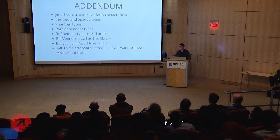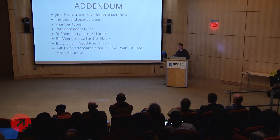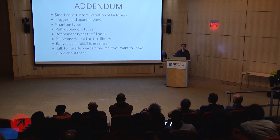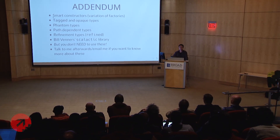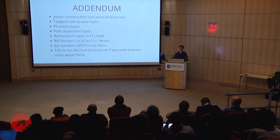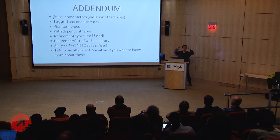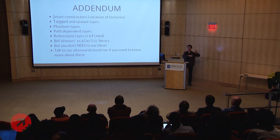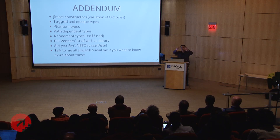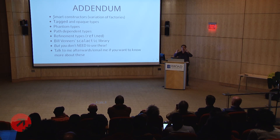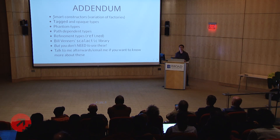Question: what is a phantom type? A phantom type is a type that doesn't have any runtime representation but exists only in the mind of the compiler. The way you usually see it implemented in Scala is that there's some type variable whose type doesn't correspond to any field in your class — it just sits at the type declaration. By labeling it that way — going back to the idea of types as labels — you can make sure types line up and enforce certain invariants. That's the very quick summary; if you want to know more, talk to me afterwards.